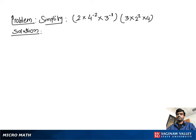Simplify 2 times 4 to the negative 2 times 3 to the negative 1 times 3 times 2 squared times 4. First, we write the 2s together, 3s together, and 4s together.